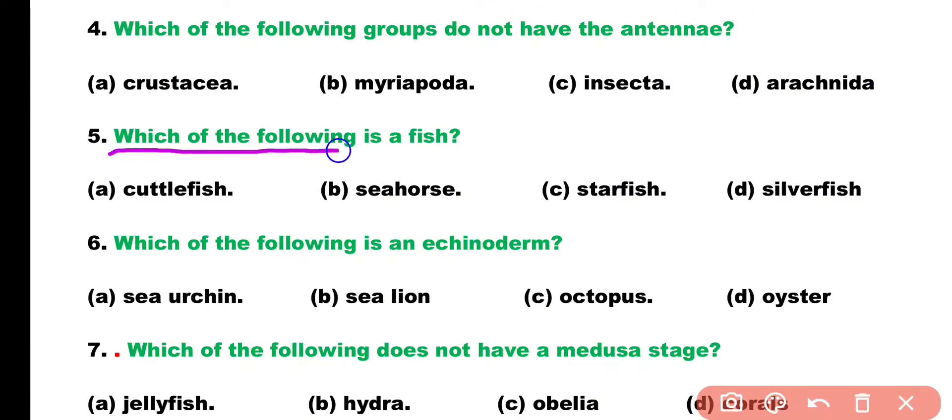Question 5. Which of the following is a fish? Cuttlefish, seahorse, starfish, or silverfish? Correct answer is Option B. Seahorse is a true fish among the given options.